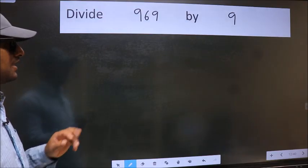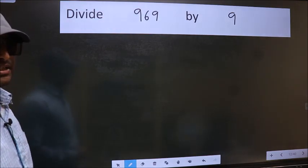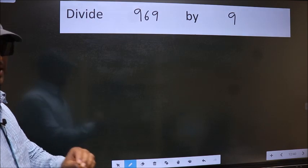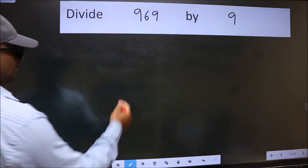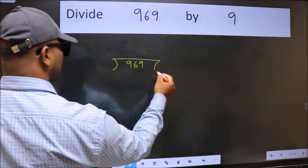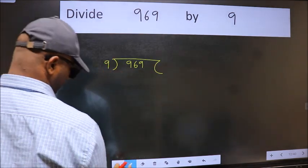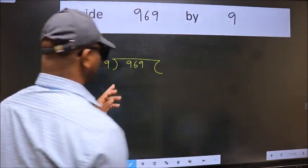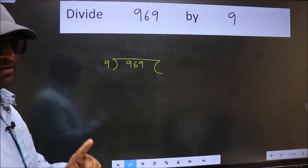Divide 969 by 9. To do this division we should frame it in this way. 969 here and 9 here. This is your step 1.